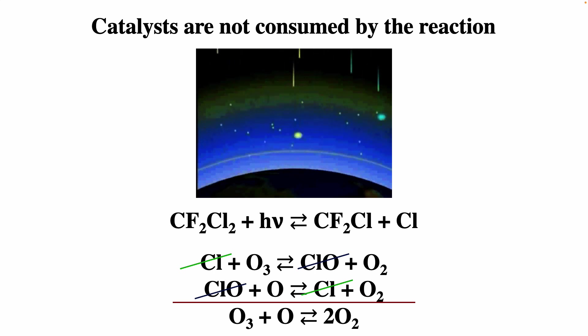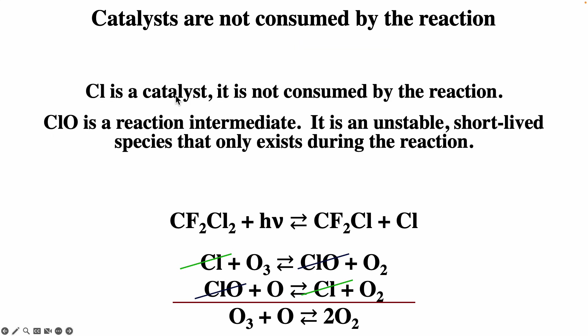Countries came together and decided to ban the production of CFCs, and over time the ozone holes will actually fix themselves. The chlorine is there at the beginning — this is a two-step process. The chlorine catalyst is there at the beginning and at the end; it's not in the net reaction. Reaction intermediates like ClO get produced by the reaction and then consumed by the reaction.